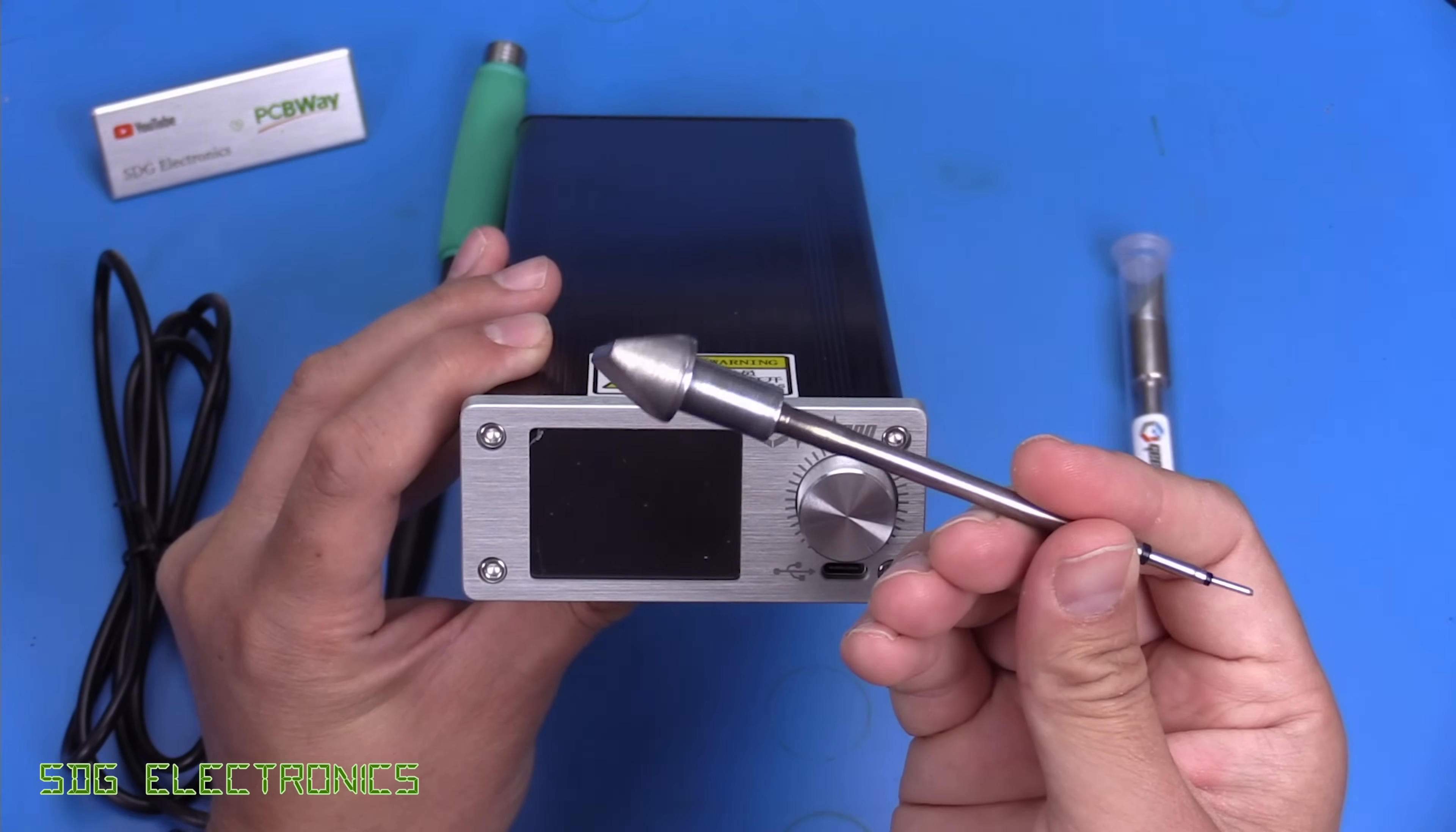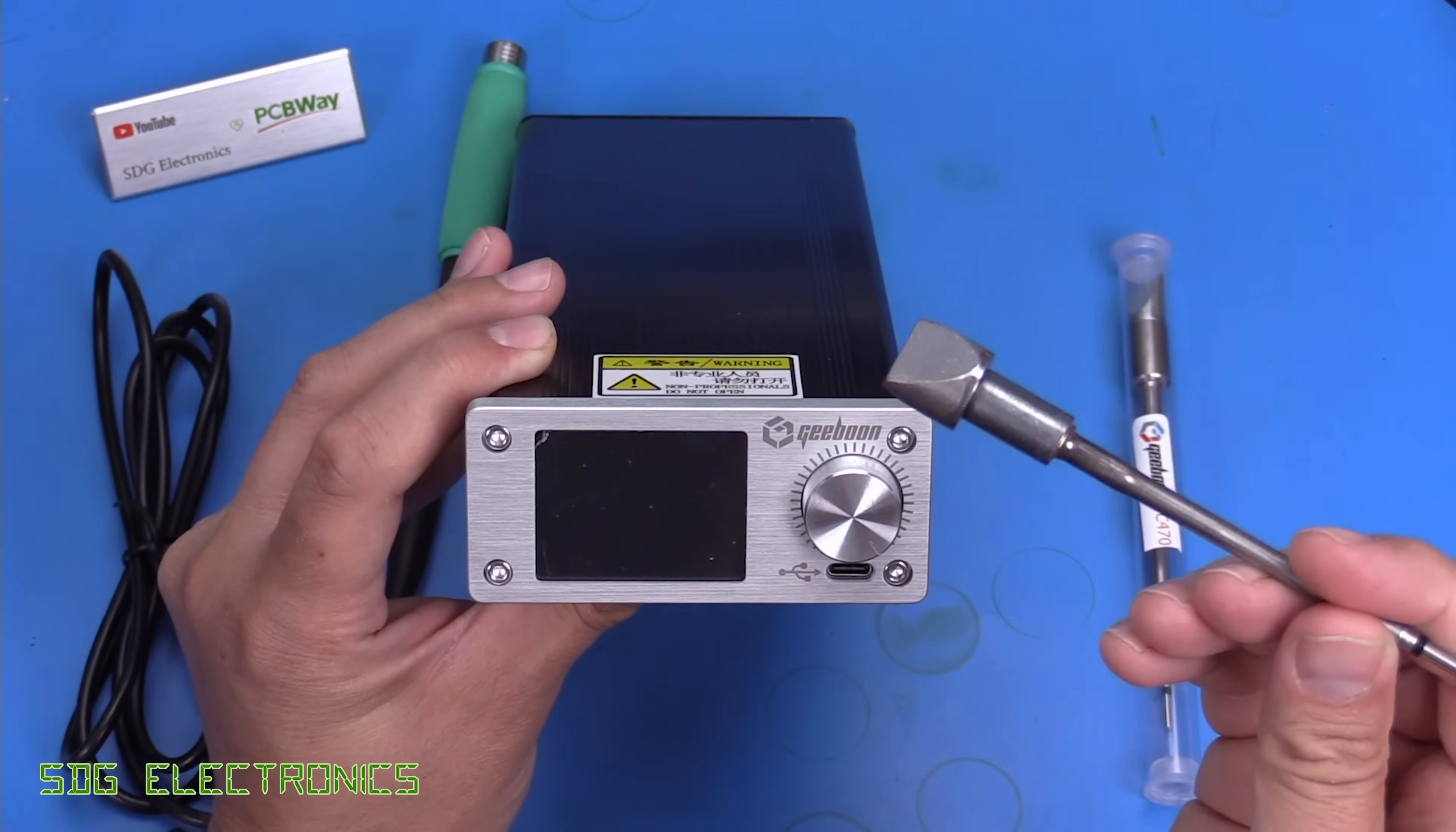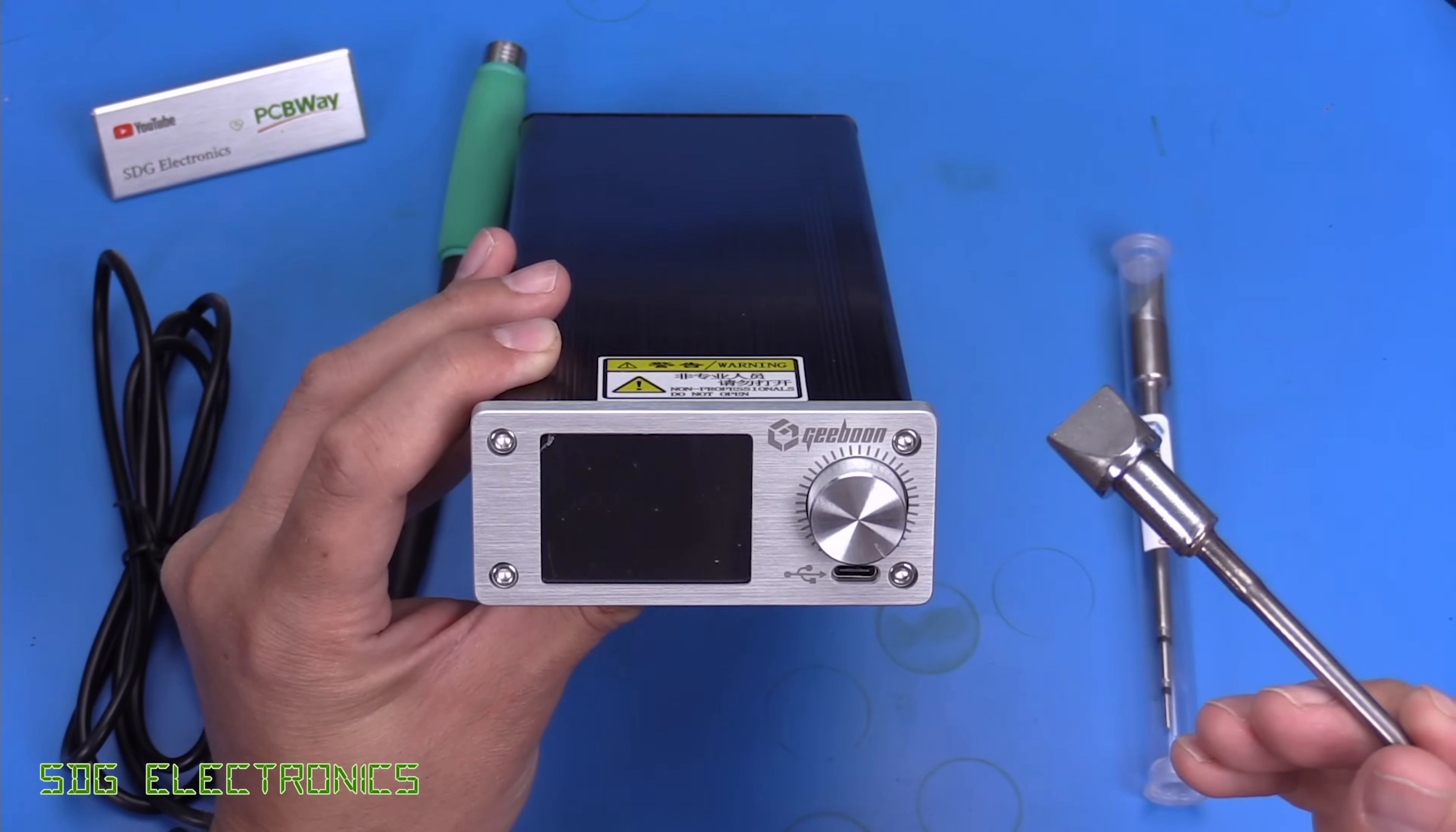These types of cartridges have a huge amount of thermal mass and are designed more for soldering things like lugs onto wires rather than PCB level rework, although there are smaller cartridges for when you've got really heavy ground planes and you need to solder something onto it.